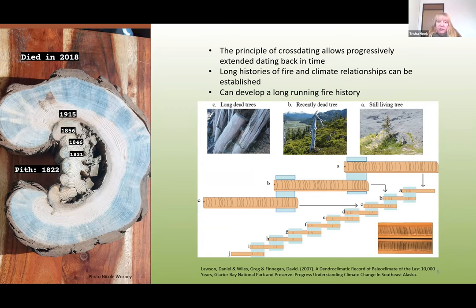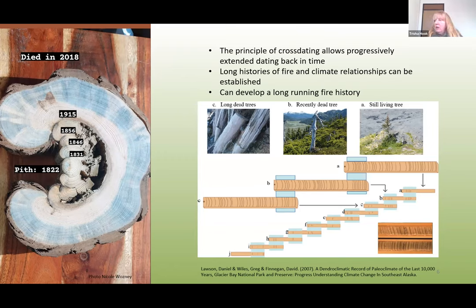Growth patterns in the trees are unique over time — this is the principle of cross-dating. Long histories of fire and climate relationships can then be established by using live trees and dead trees to go further back in time. By the patterns in the tree rings, we can line up histories of living and dead wood. Wood can be standing, dead, buried, or found in lakes. On the BC coast they have successfully made chronologies that go back 13,000 years, but it is more common to only go back 300 or 400 years.